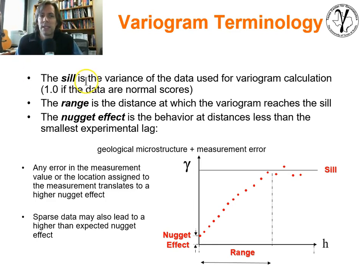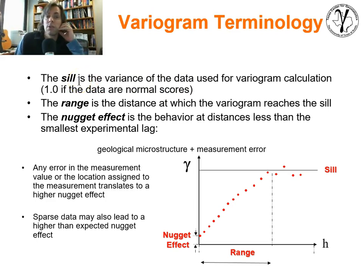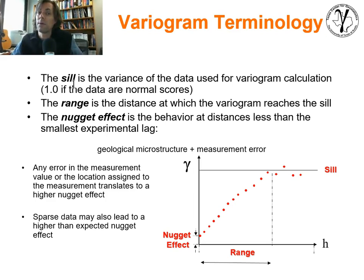We talked about the fact that we have a sill, and the sill is the variance of the data used for the variogram calculation. If we're dealing with data that has been normalized to have a variance equal to 1 — standard deviation equal to 1 — then we'd expect the sill to equal 1. To calculate the sill: take the data you're calculating the variogram on, calculate the variance, and plot the sill to support interpretation.